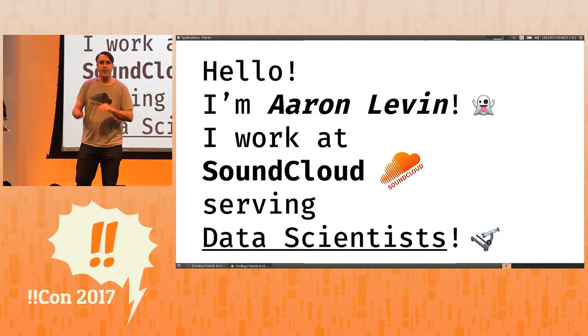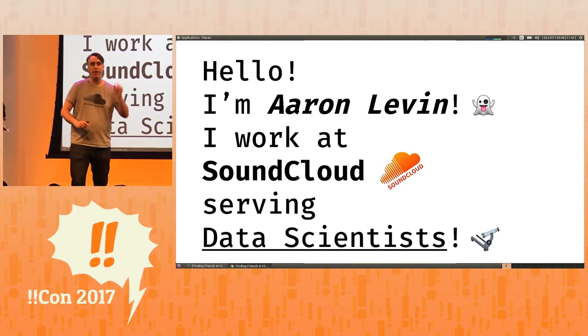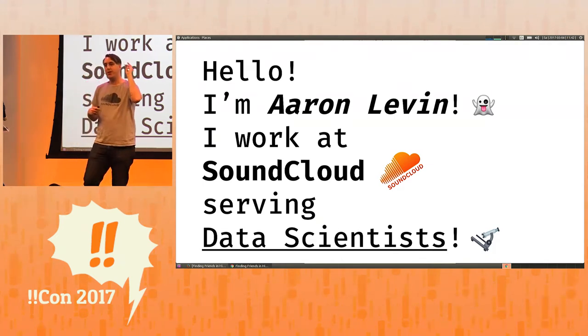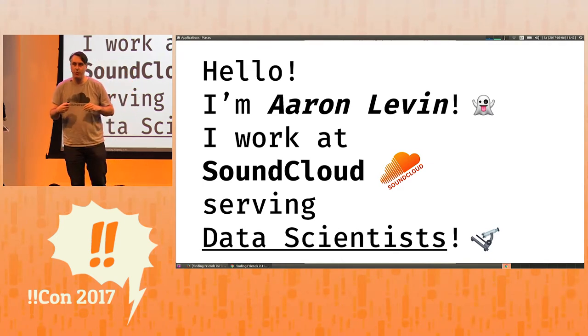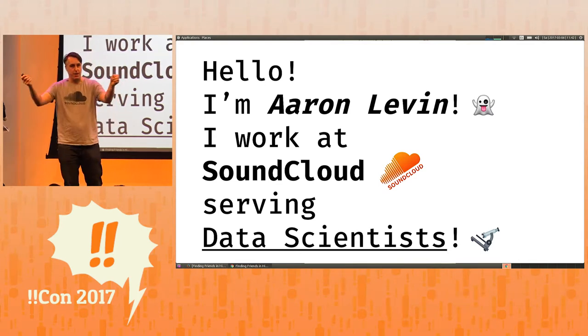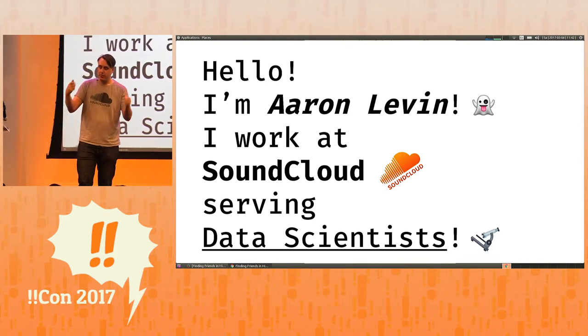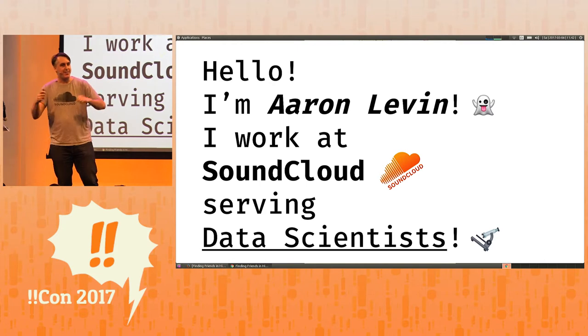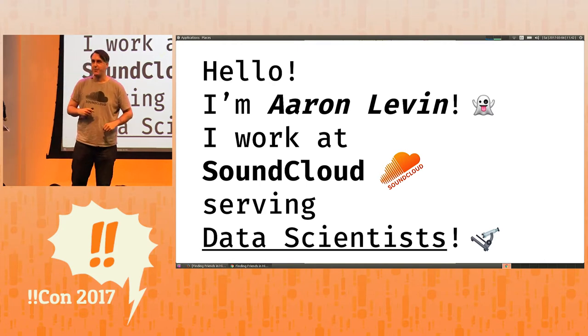Before I talk about locality-sensitive hashing, I need to review a few concepts so that we're all on the same page. We will define vectors, then talk about machine learning algorithms and how they produce vectors, and after that, we will show how in recommendations algorithms we use these vectors and compare them to each other to produce recommendations. We're going to talk about how slow that is, and then how locality-sensitive hashing helps make this faster.